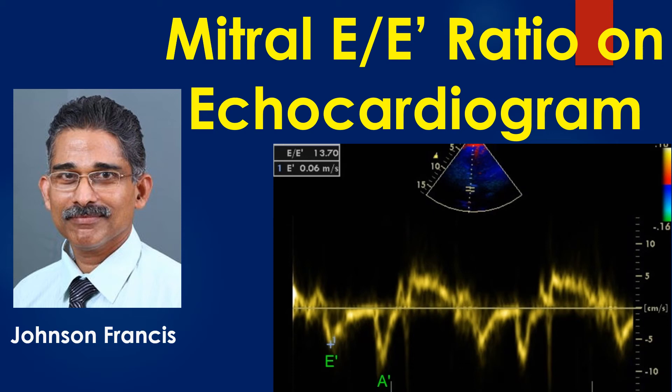Mitral E by E prime ratio on echocardiogram is an important indicator of left ventricular diastolic function. It can be used in the presence of atrial fibrillation when the E by A ratio is not available.